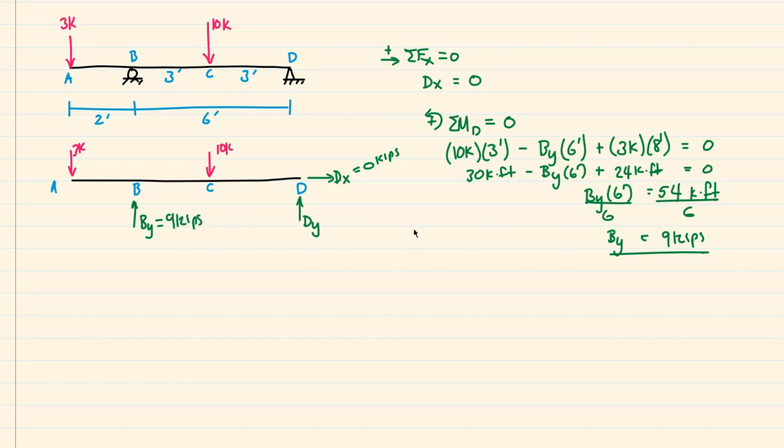And then finally, I can do sum of forces in the Y direction is equal to 0 with up being positive. So I have this minus 3 kips here at point A, and then I have our newly found reaction B-Y, which is going up, and that's 9 kips. Then I have this minus 10 kips, and then finally plus D-Y. This needs to equal 0.